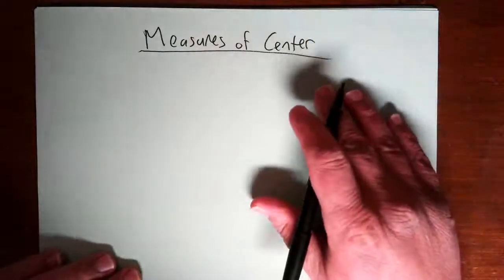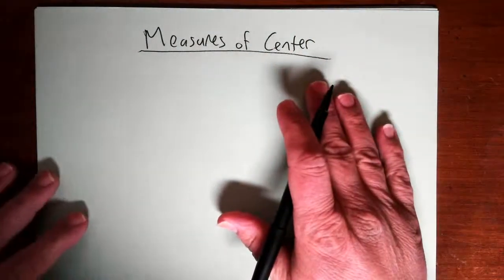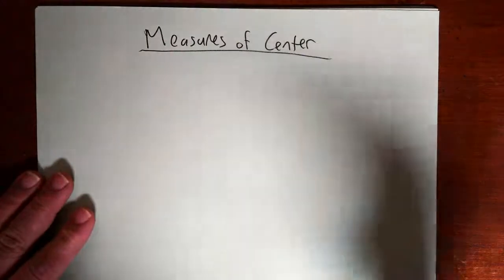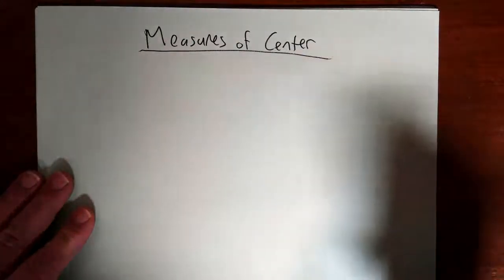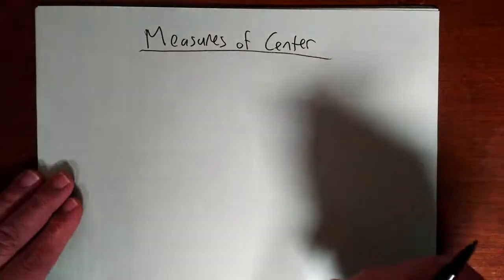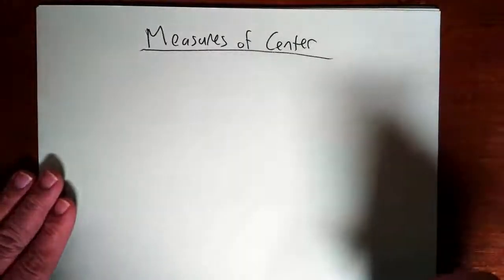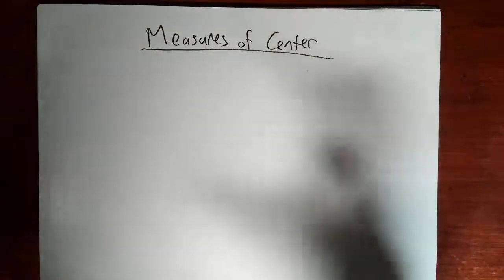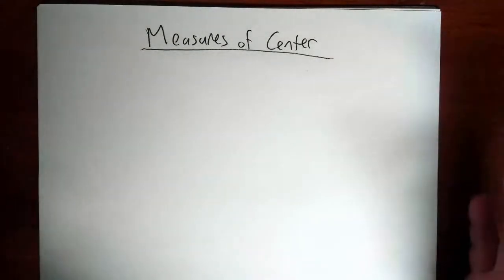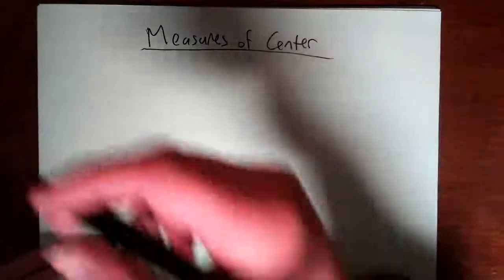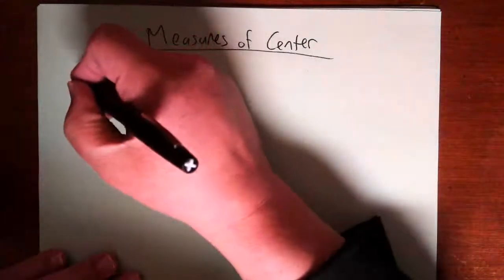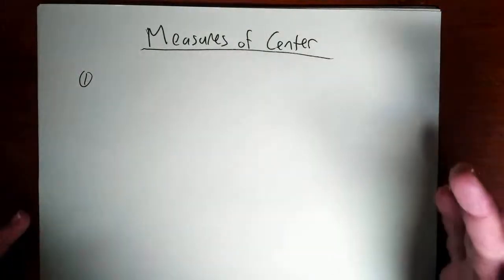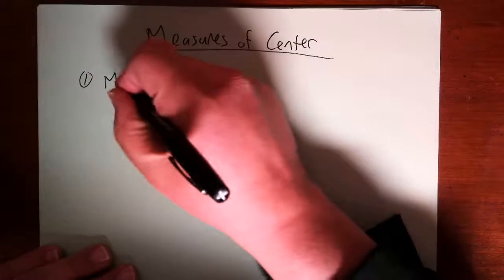The first type of descriptive measure we're going to talk about are called measures of center. That name makes you think of a number that describes the center of the data set, but that's not always the case. A better way of thinking about measures of center is: if you had a big set of data and had to use a single number to represent it, what number would you choose? Most people would probably choose the average — add up all the values and divide by the number of values.